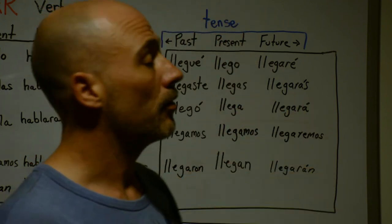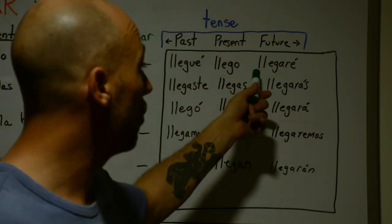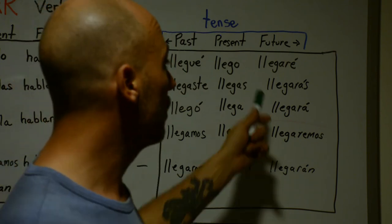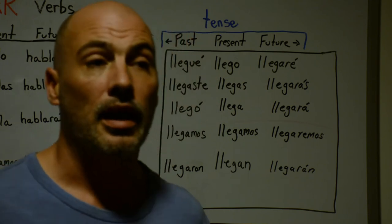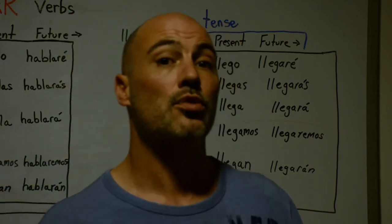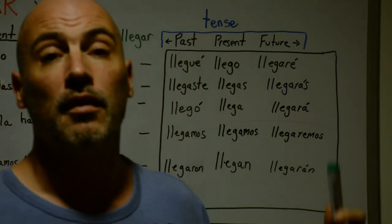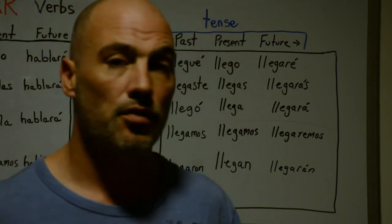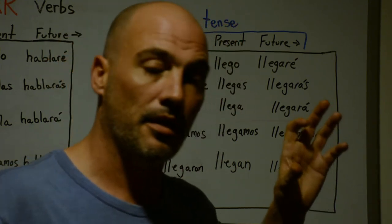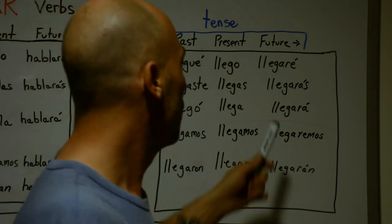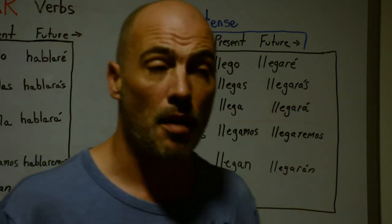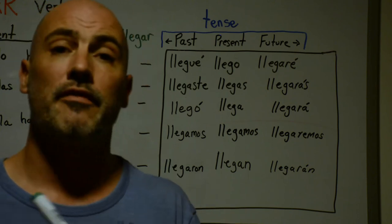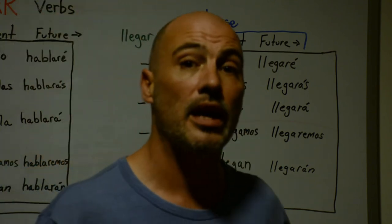You can say 'I will arrive tomorrow' simply in one word: llegaré. Everybody knows what it means. You can also say the same thing without using that verb in the future tense — 'me voy a llegar' — I am going to arrive. So if you want to tell a buddy 'I'm going to arrive tomorrow,' you can say 'llegaré mañana' — two words, very simple — or 'me voy a llegar mañana.'